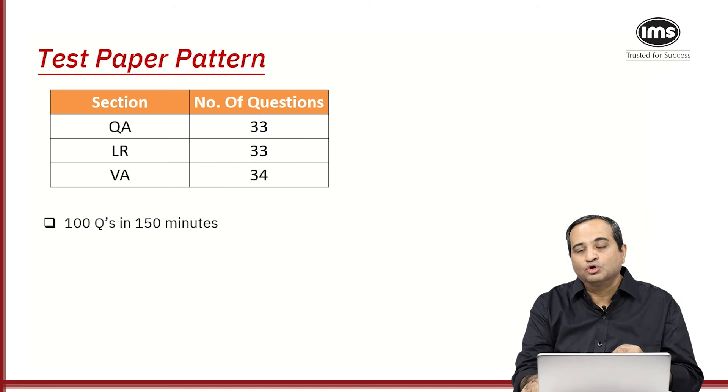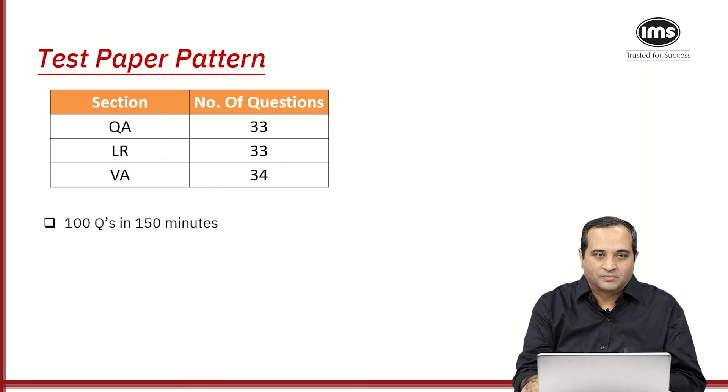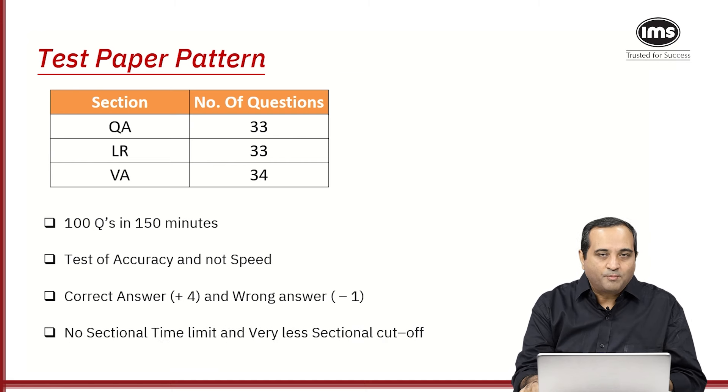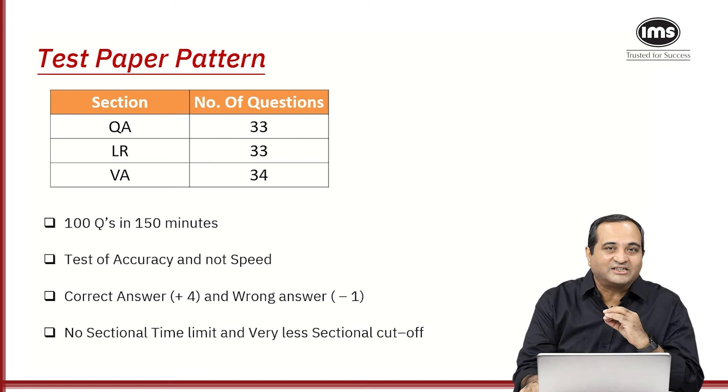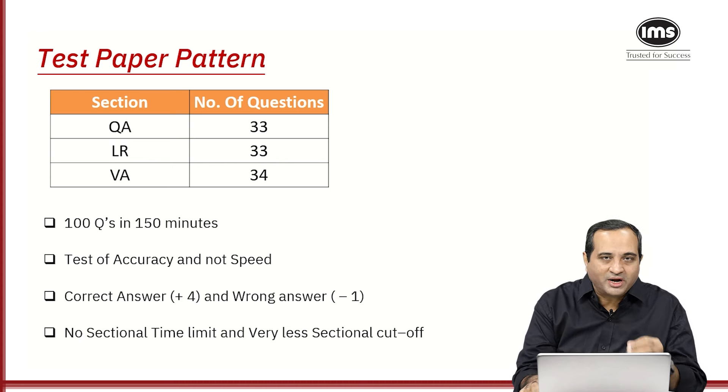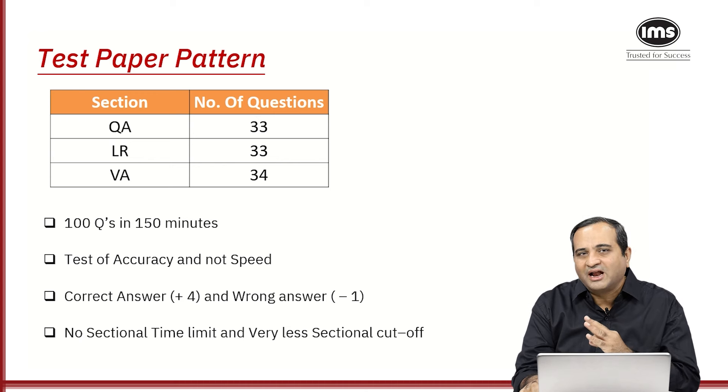So on an average, you should realize this is a test of accuracy and not a test of speed. Now for every correct answer, you get plus 4 and for every wrong answer, one mark will be deducted. Another important thing to be remembered here is there is no sectional time limit in this test. So you can ideally jump from any section to any section. That is not something that I would suggest you to do, but you can do that. And there are actually very less sectional cutoffs which colleges are taking.